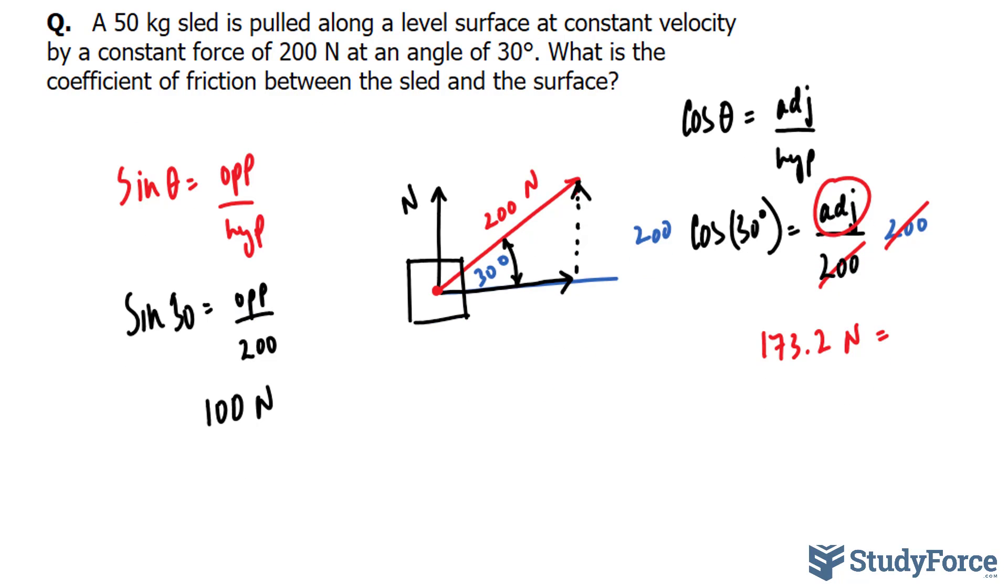Furthermore, we will be using Newton's second law to find the force due to gravity directly downwards. Newton's second law is force equals mass times acceleration. The mass of this sled is 50 kilograms, which is quite heavy. So we have 50 kilograms times the acceleration due to gravity, which is 9.8 meters per second squared.